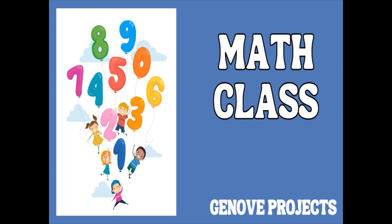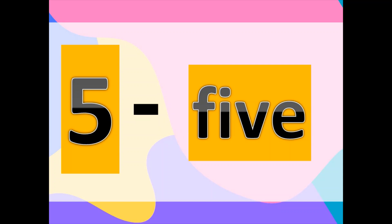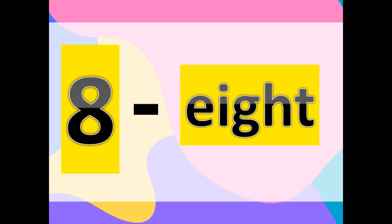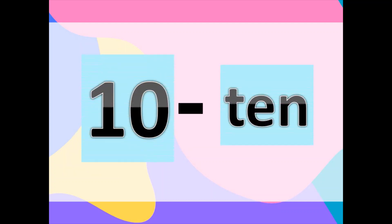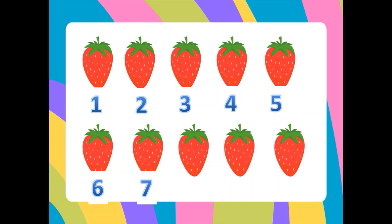1, 2, 3, 4, 5, 6, 7, 8, 9. Now let's count the strawberries on the screen and find out how many are there. So 1, 2, 3, 4, 5, 6, 7, 8, 9, 10. There are 10 strawberries.